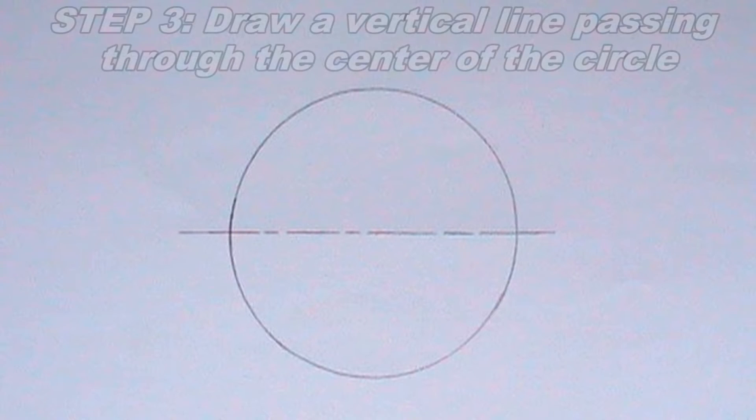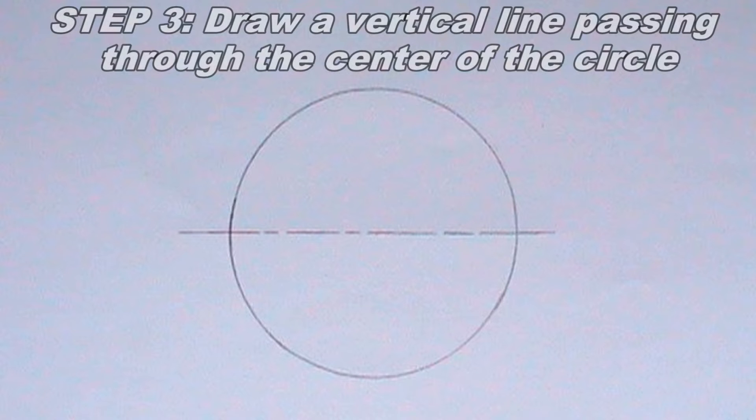Having drawn the horizontal line, I will also draw a vertical line passing through the center of the circle. To ensure that the line is perfectly vertical, I will use my t-square and set square.